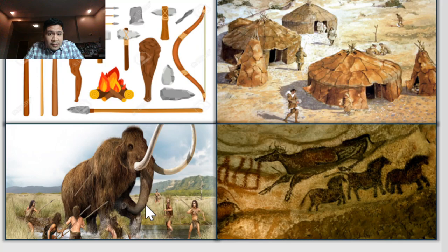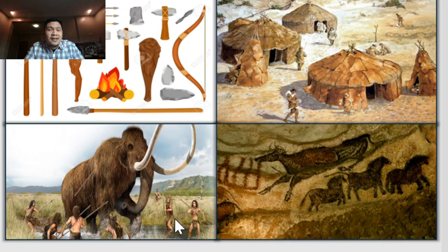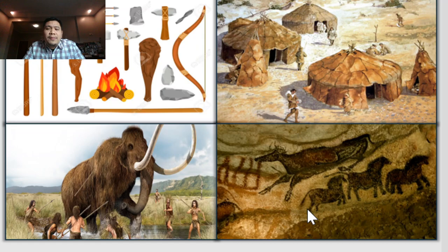The third picture shows the ancestor of elephants — the mammoths. You can see individuals during the Stone Age trying to spear the mammoth, not knowing that the mammoth could actually hurt them in the process. That's the trial and error method. And in the fourth picture, we have some cave art or cave paintings, which we'll discuss the reason behind later.